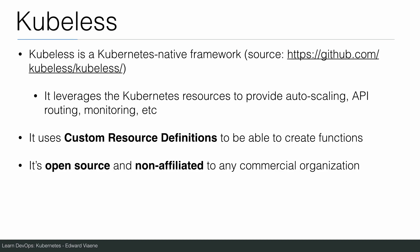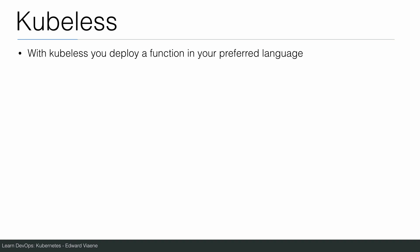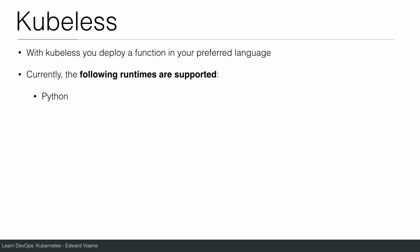Kubeless is open source and non-affiliated with any commercial organization. It also has a UI available for developers to deploy functions. With Kubeless, you deploy a function in your preferred language. Currently the following runtimes are supported: Python, Node.js, Ruby, PHP, .NET, Golang, and some other ones — but these are the most popular ones used.